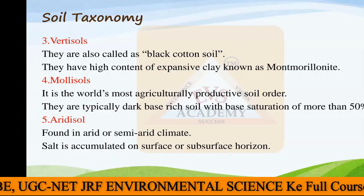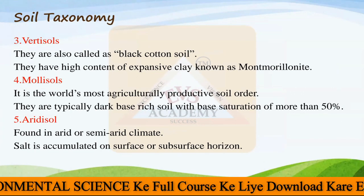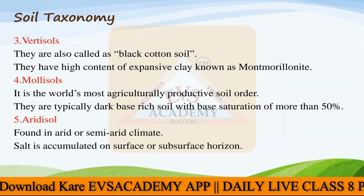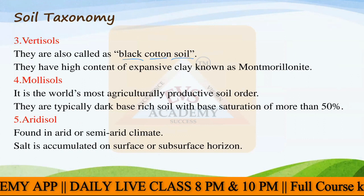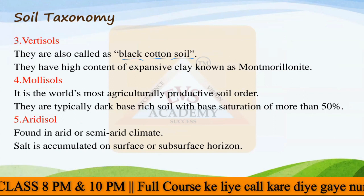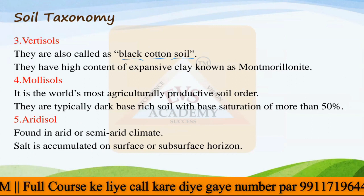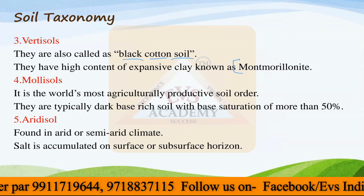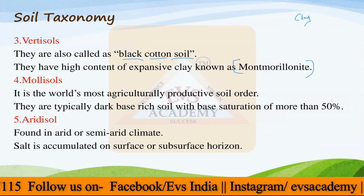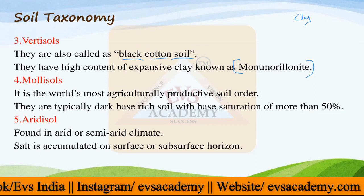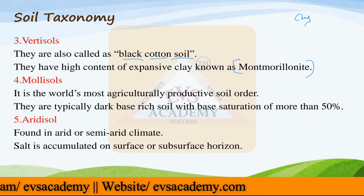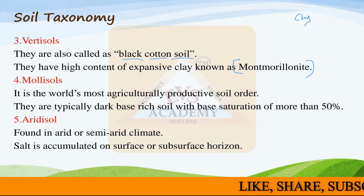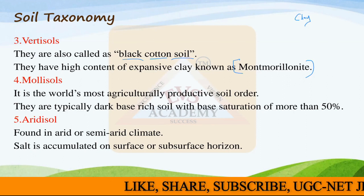The next soil order is Vertisols. These are also called as Regur, also called as Rangena - a type of black soil. They are also called as black cotton soil because black soil is best for cotton growth and development. They have a high content of expansive clay known as Montmorillonite. Different types of clay minerals include Kaolinite, Vermiculite, and Montmorillonite. Out of these, Montmorillonite type is very common in Vertisols - the highest amount of clay mineral you can find is Montmorillonite.